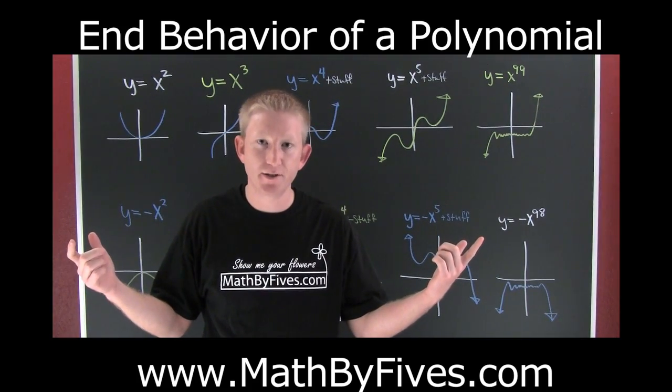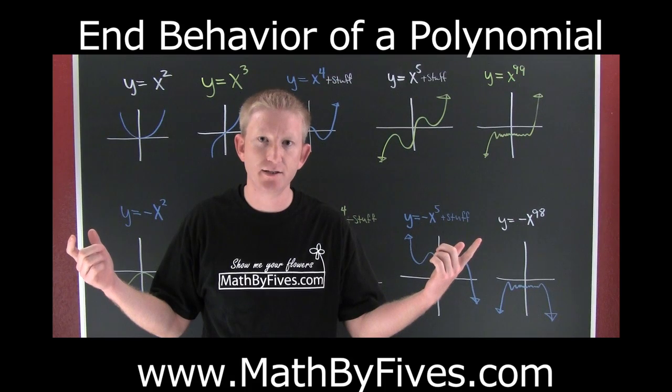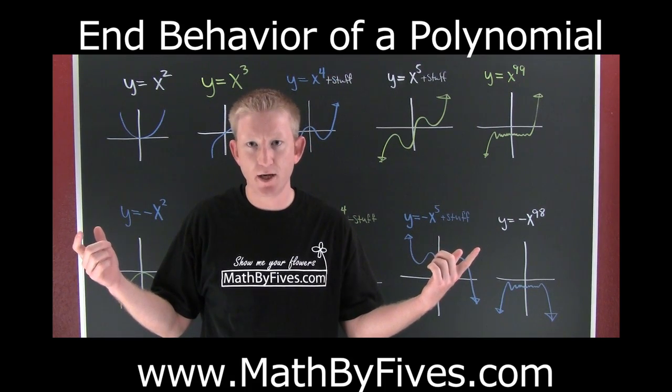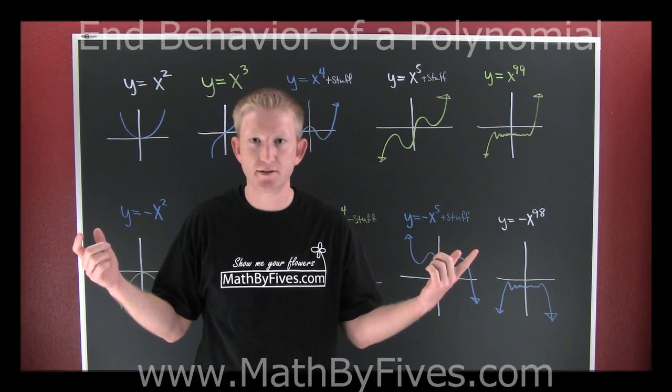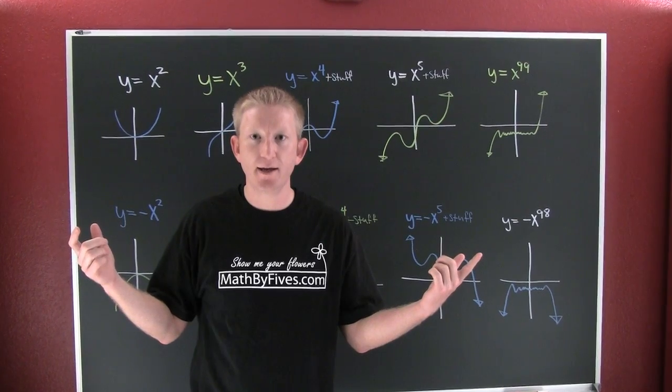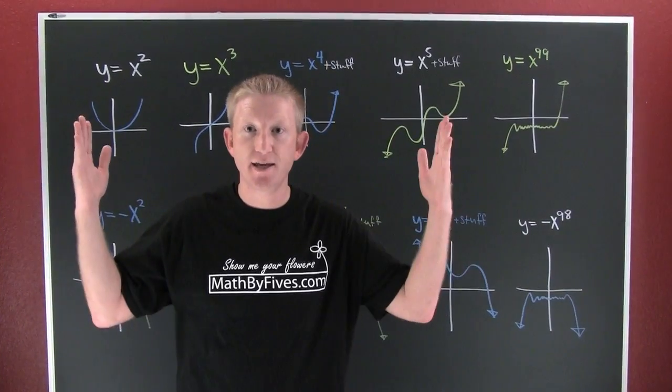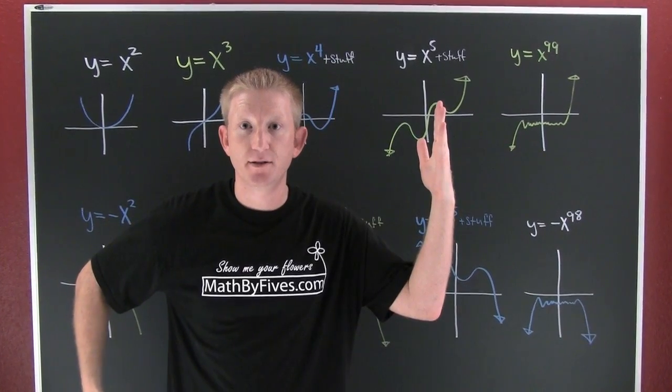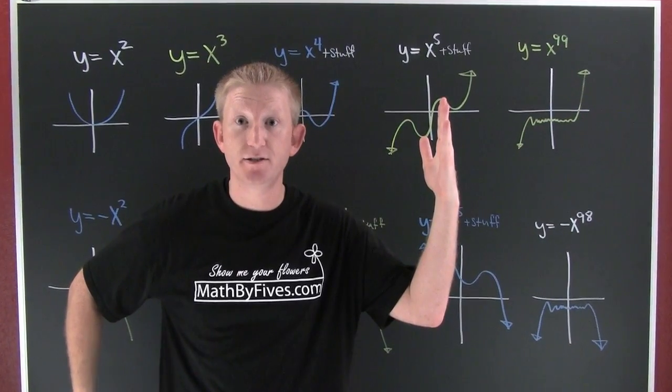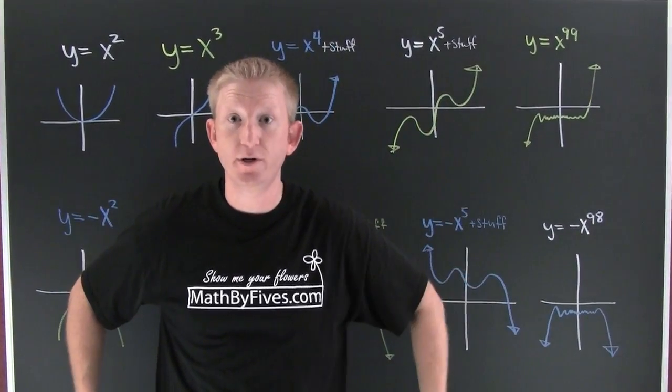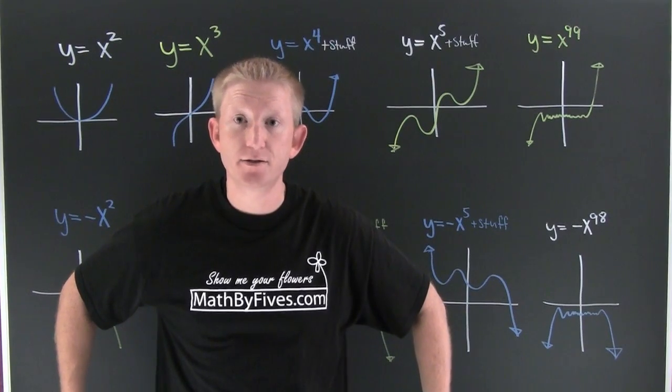The end behavior of a polynomial is going to be determined by its leading term. When I say leading term, I'm talking about the term with the greatest degree. Let's talk about the end behavior of these guys. It's going to end either the same or mixed. The sign in front is going to determine whether or not it ends up or down. Let's go through a few.